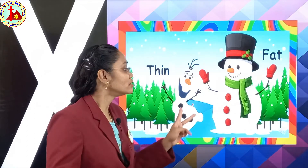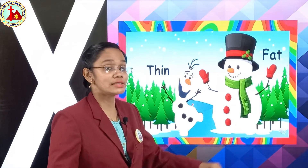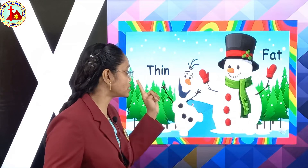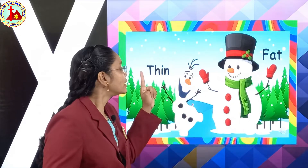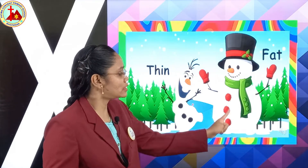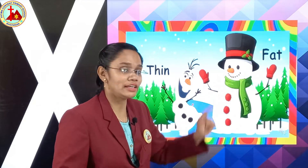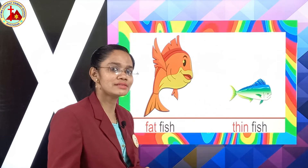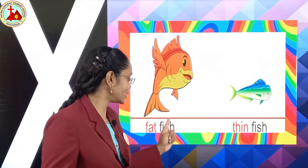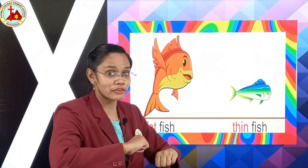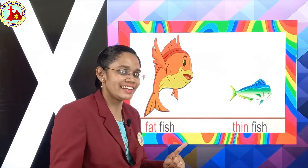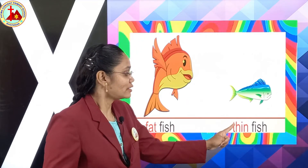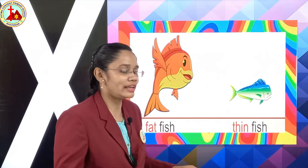See, there are two snowmen. This snowman is fat and this snowman is thin. Opposite of fat is thin, and opposite of thin is fat. Spelling of thin: T-H-I-N. And this snowman is fat: F-A-T. Opposite of thin is fat. Now this is a fat fish and this is a thin fish. Fat — F-A-T. Thin — T-H-I-N.